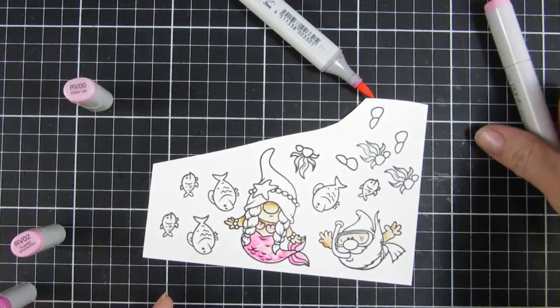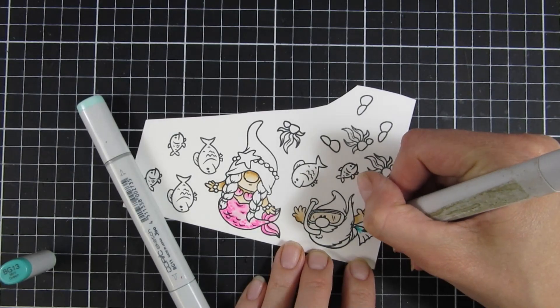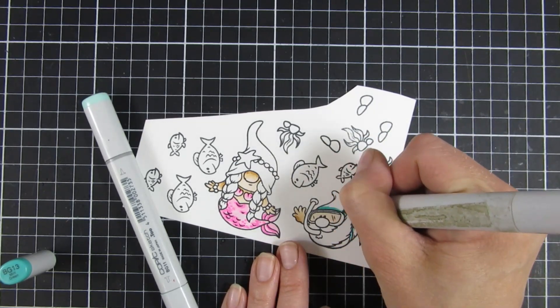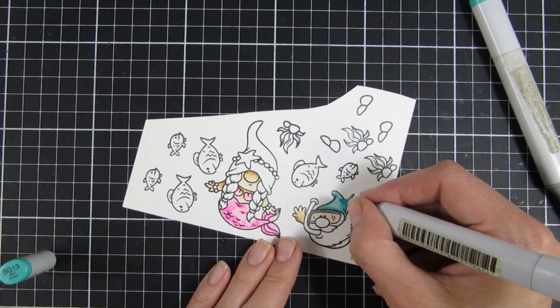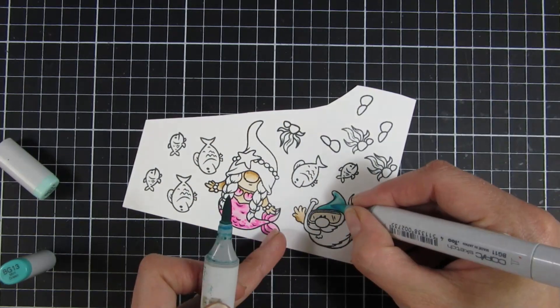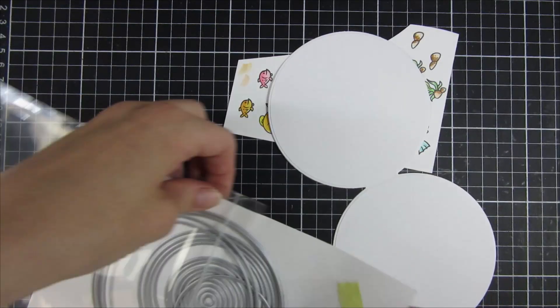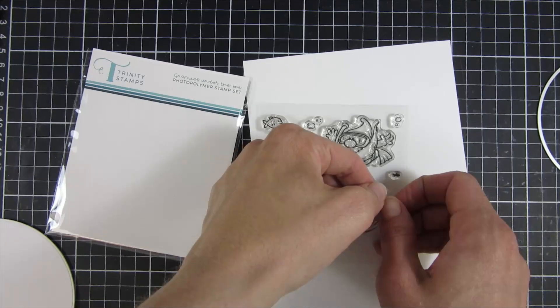I usually don't use more than two or three shades for my coloring. If I have more, it has to be a very large image. But most of the stamps that I am using are fairly small, so with two to three markers you get a long way. You don't have to pick up all of the markers out there, just the colors that you prefer using.